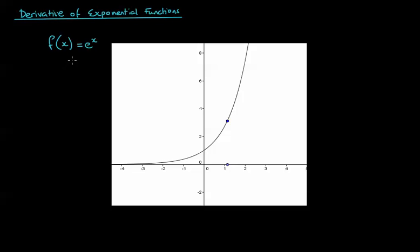What we're going to do is look at the derivative of exponential functions. Let's start with the basic one, the one where we build up from. Take f of x equals e to the x, and this is the graph of e to the x here.